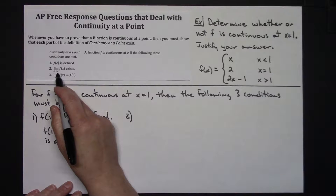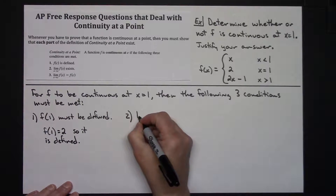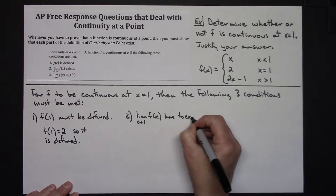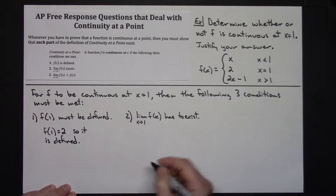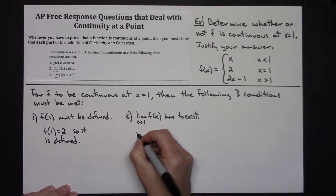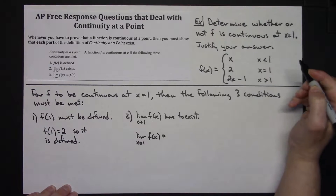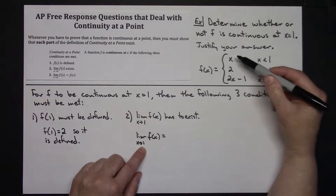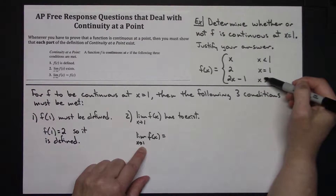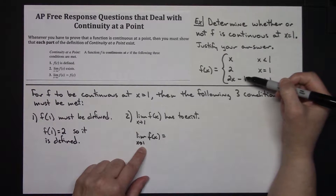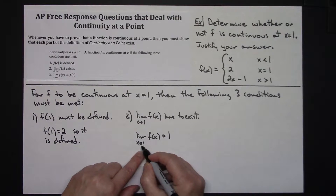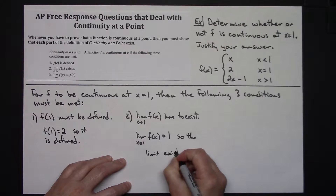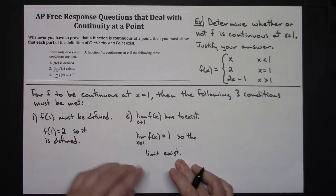The second part: the limit as x approaches c of f of x has to exist. So I have to show the limit as x approaches one of f of x exists. I'm going to calculate that limit. Coming from the left, where x is less than or equal to one, the limit would be one. Coming from the right, where x is greater than or equal to one, if I plug one in, two minus one is one — so again the limit is one. Therefore, the limit as x approaches one of f of x equals one — the limit exists. The second part of the definition holds true.